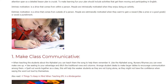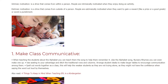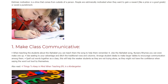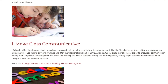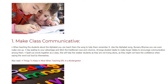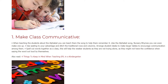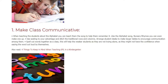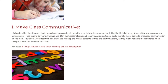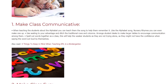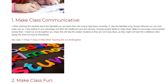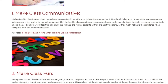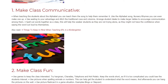1. Make Class Communicative. When teaching students about the alphabet, you can teach them the alphabet song to help them remember it, or nursery rhymes — you can even make one up. Use seating to your advantage and ditch the traditional rows and columns. Arrange student desks to make larger tables to encourage communication. Spell out words together as a class; this will help weaker students who may not have the confidence to say words out loud by themselves.